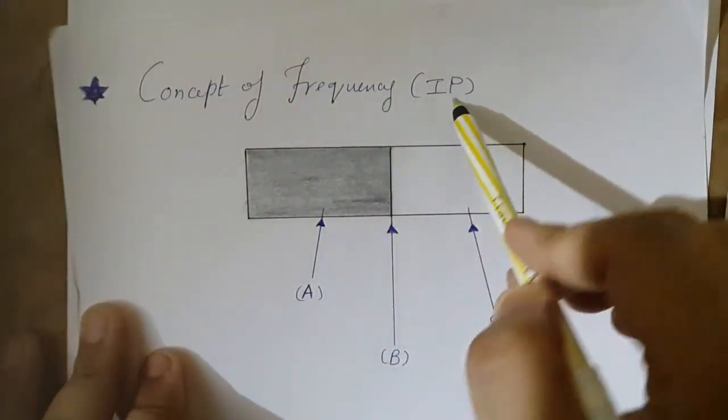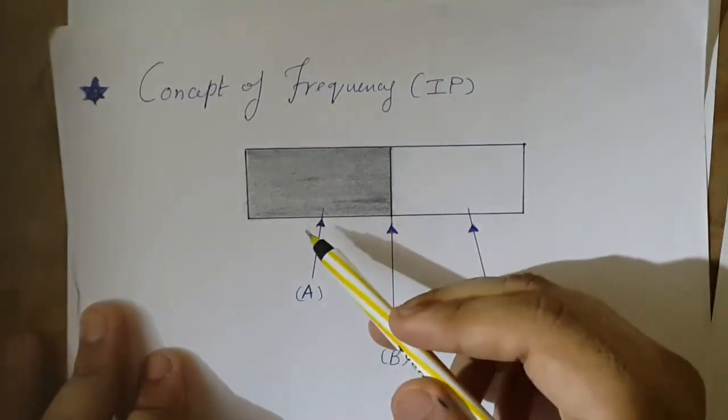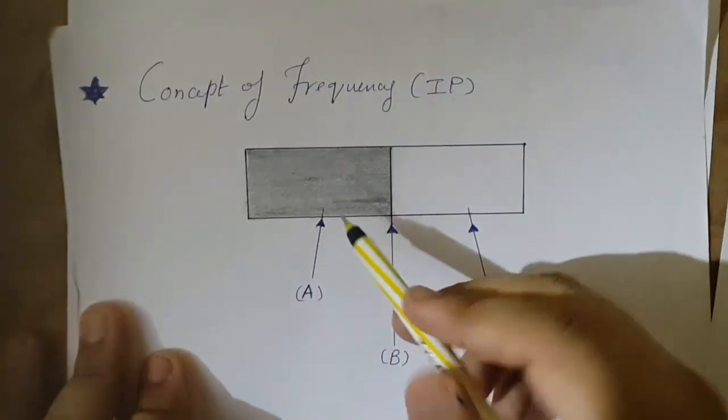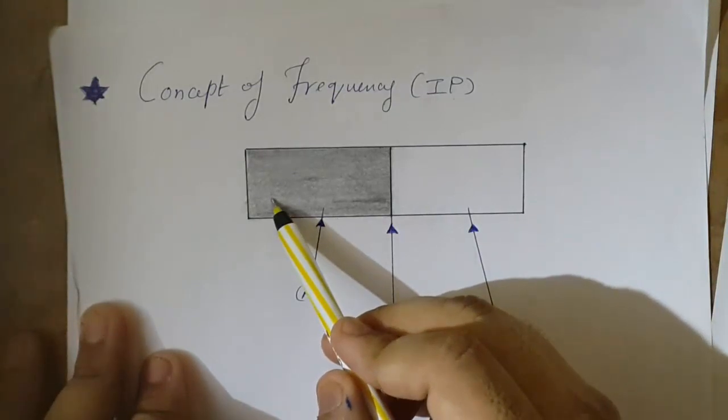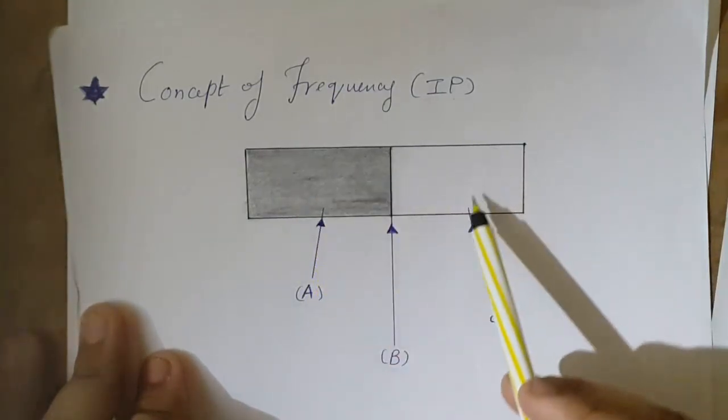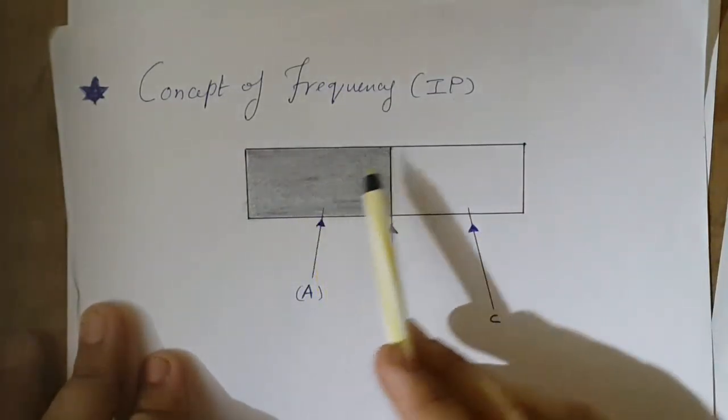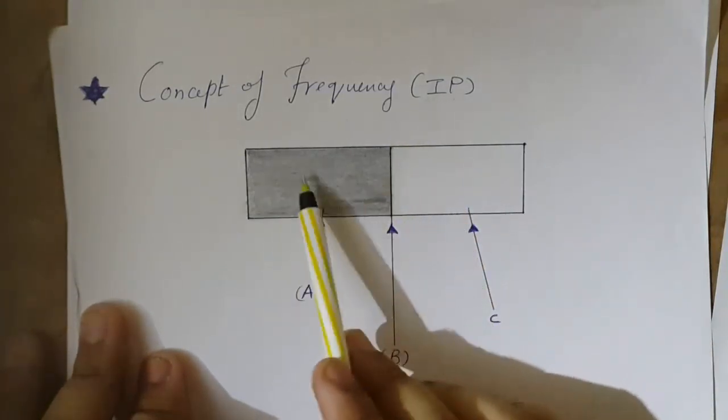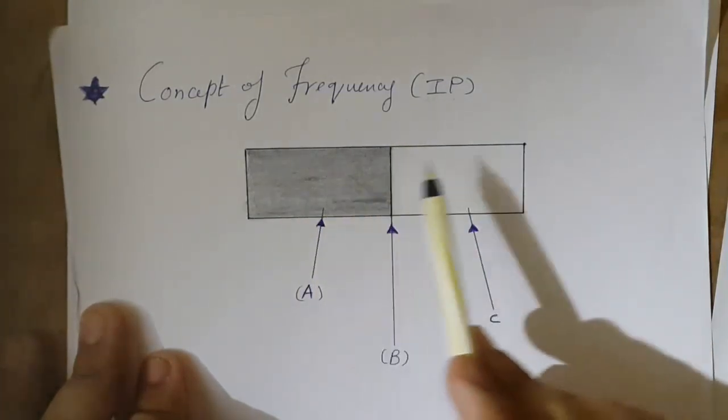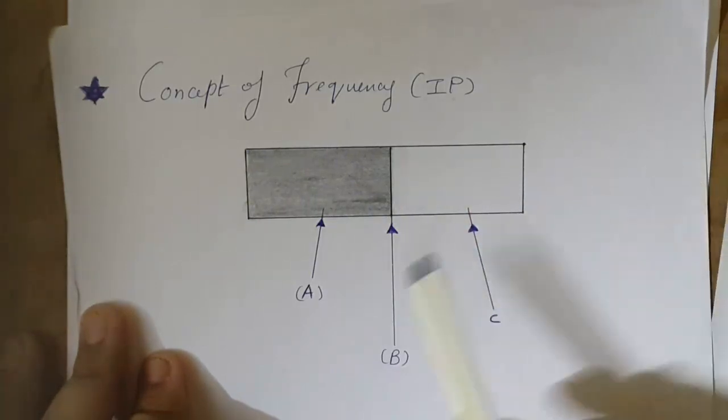There is also a concept of frequencies for images. Now let us see what this concept is. As I have shown here, this is my image fairly divided into a black portion that I have shaded and a white portion.